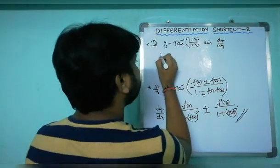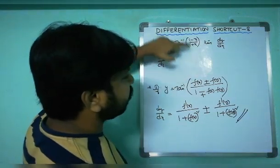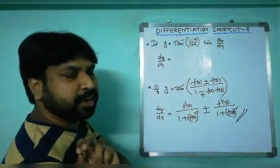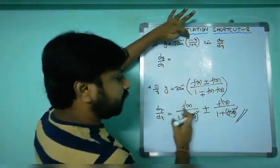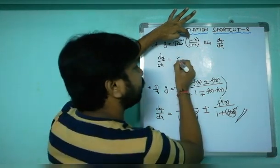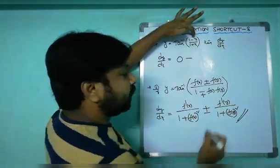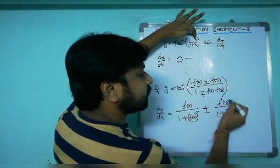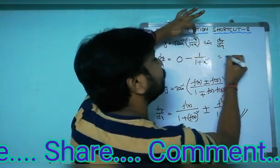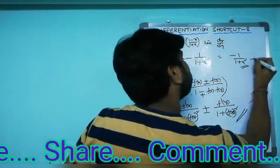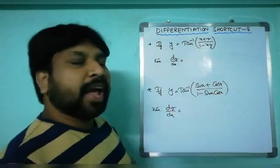Now applying this shortcut to the original problem: tan⁻¹((1 minus x)/(1 plus x)). Here f(x) is 1 and f(y) is x, with a negative sign between them. The derivative of 1 is zero, so that term is zero. Since there's a minus sign, we keep the negative, and the derivative of x is 1. So dy/dx equals minus 1/(1 plus x²).